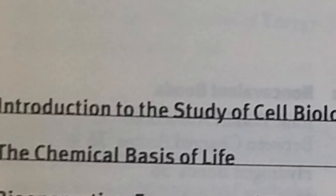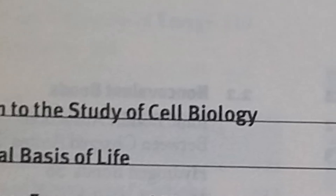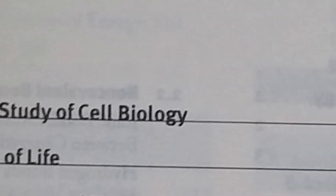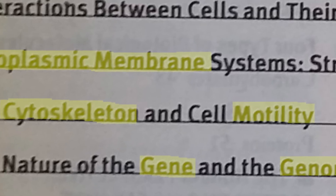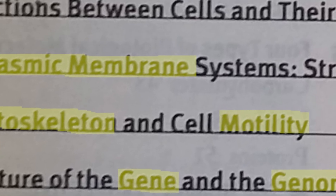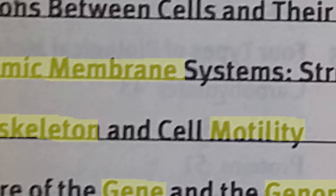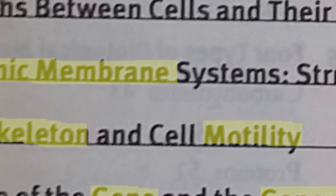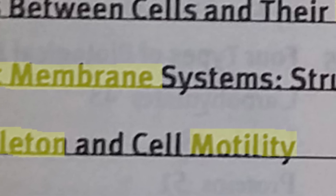Take headings for instance. A lot of texts will have a chapter called introduction, which is generic and doesn't tell you anything specific about the text. If I am reading a text about cell biology on the other hand, and there is a chapter called 'The Cytoskeleton and Cell Motility,' I am going to write down cytoskeleton and motility, because they seem highly relevant.